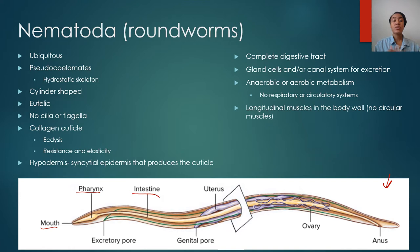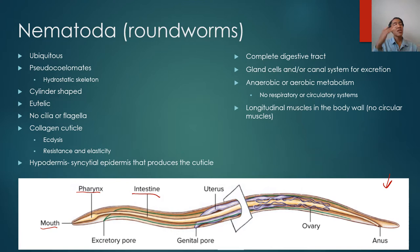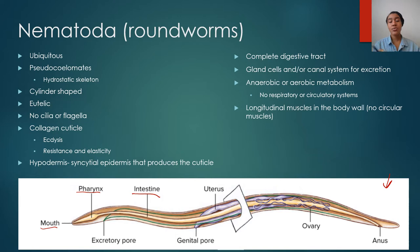Nematodes can survive under both anaerobic and aerobic conditions depending on the species, because they have different mechanisms to get energy depending on conditions. They also have longitudinal muscles only — unlike annelids, which had both longitudinal and circular muscles. Nematodes only have muscles that run from their anterior end to their posterior end; they don't have muscles that go around the circumference of the organism. This impacts how they move, and we'll talk about that in a second.